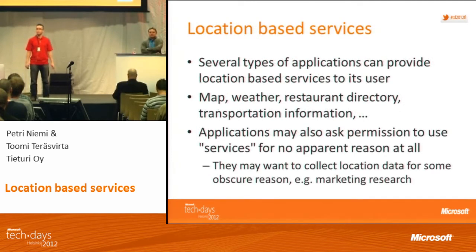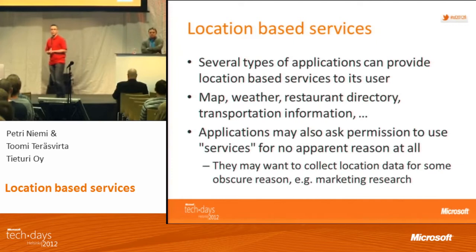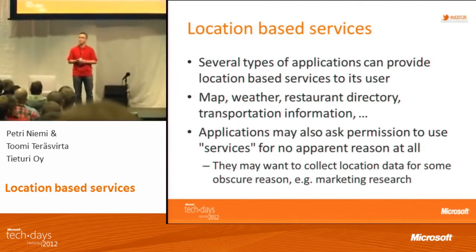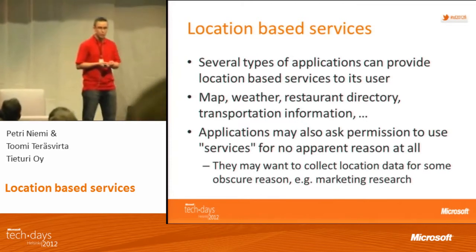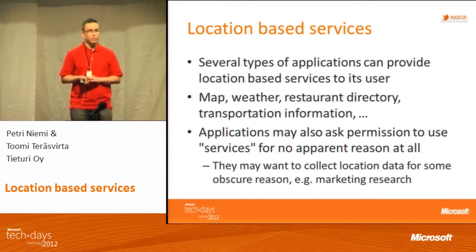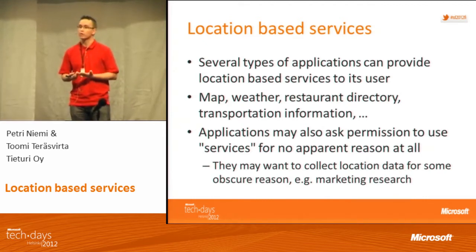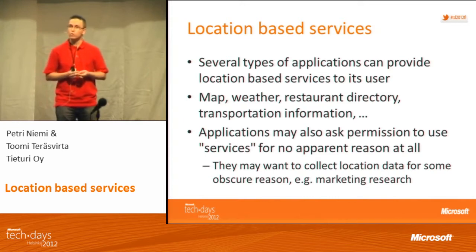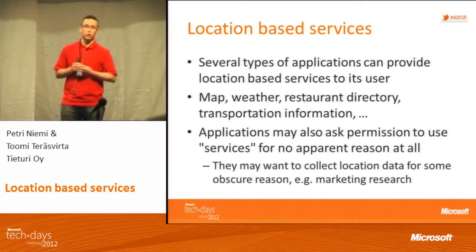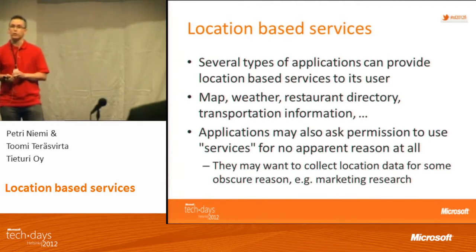Location, location, location — this is the big hype nowadays. All kinds of applications can benefit from location: maps, weather, restaurants, social networking, route services for public transportation, and so on. You can probably use this technology one way or another. It might be something not visible to the user — something your application collects in the background for marketing research or whatever you wish. You need to ask for permission, of course, but you don't have to show it.